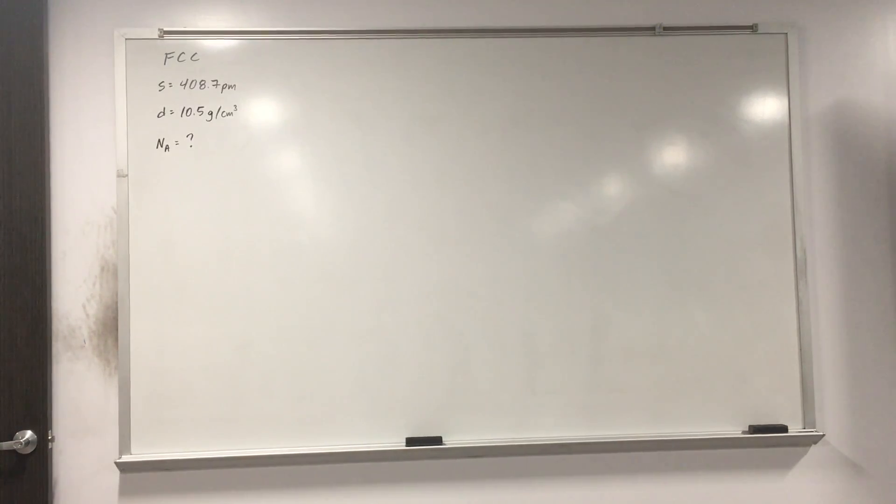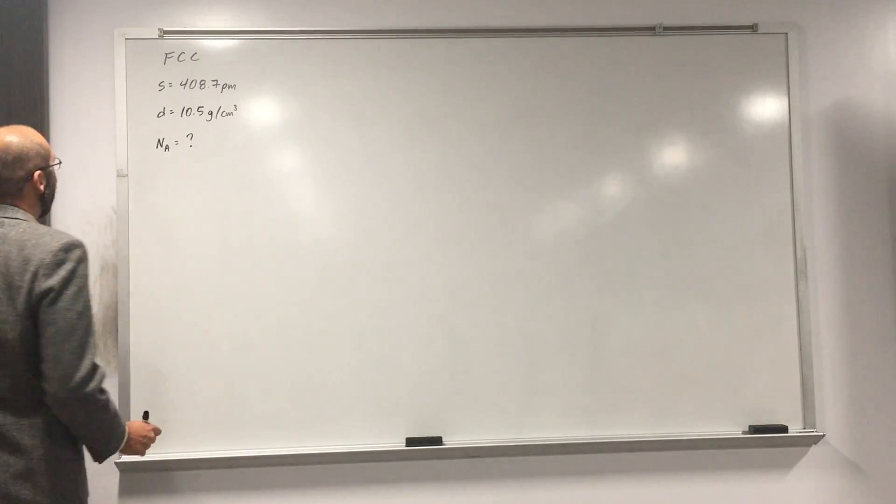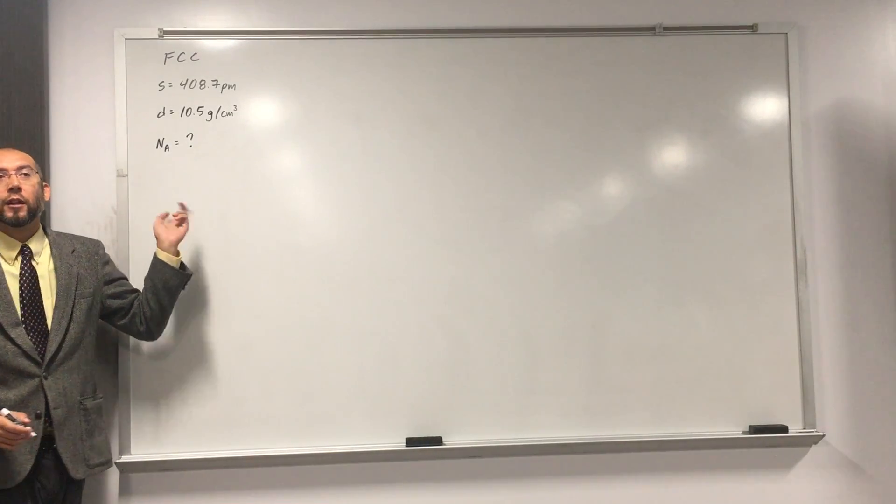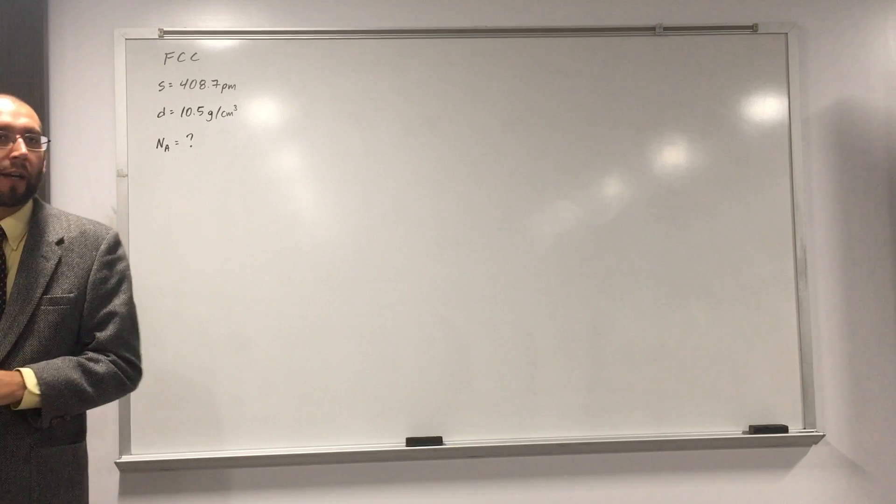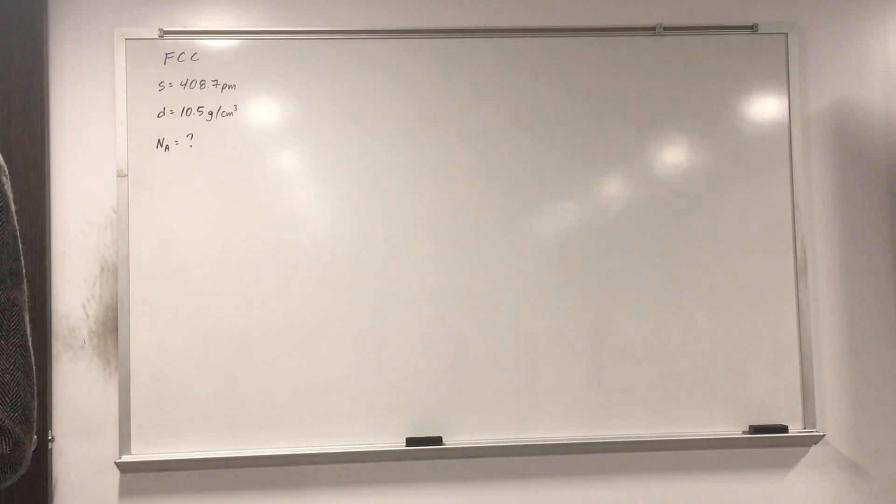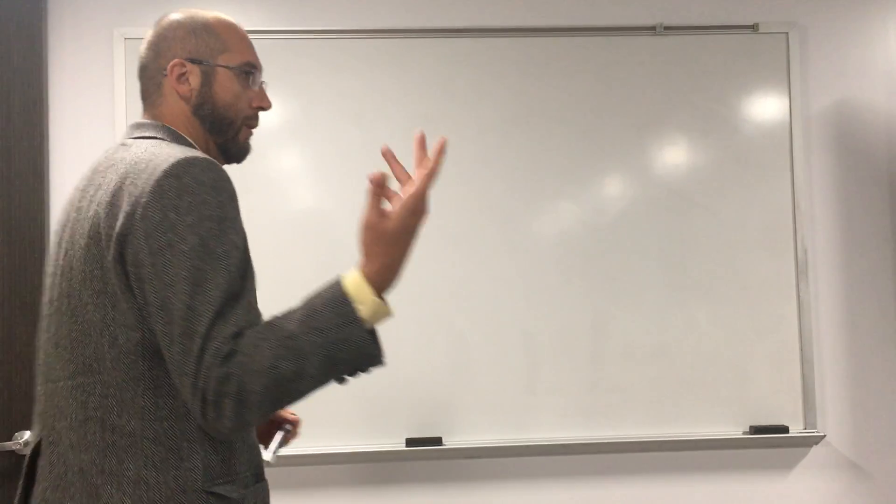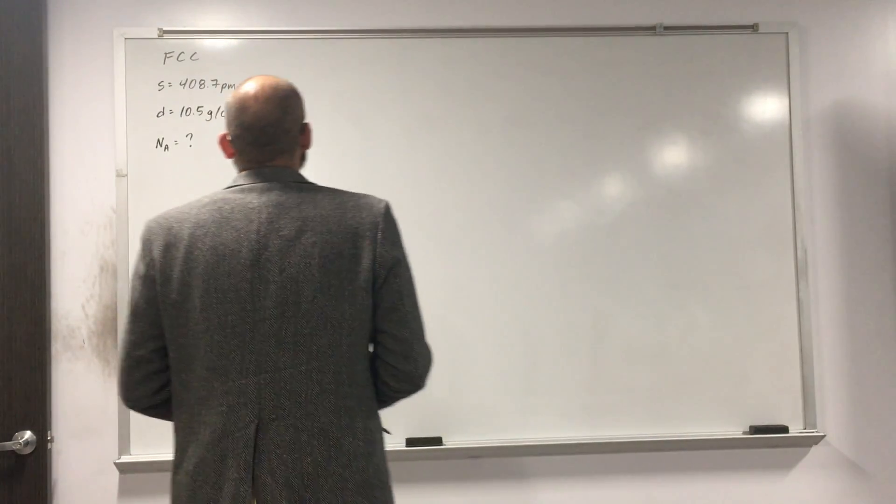So in this video, we're going to be calculating Avogadro's number even though we already know it. We're hoping to get something close to the approximate value that we know of Avogadro's number, which is 6.022 times 10 to the 23.